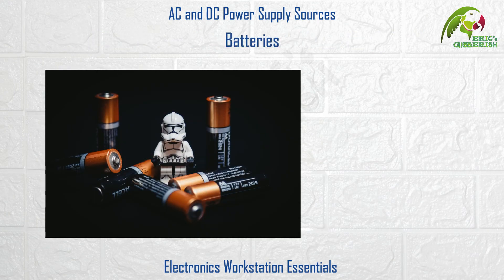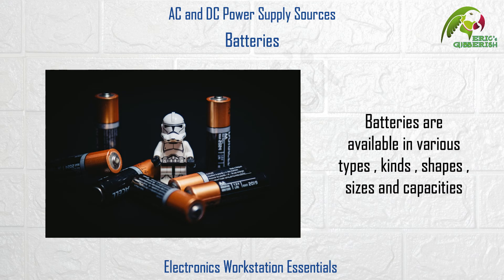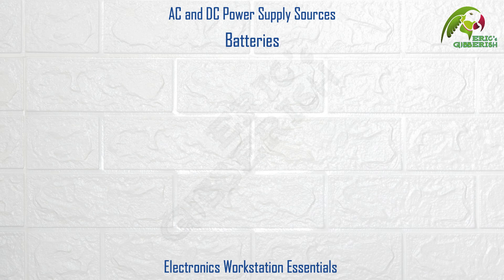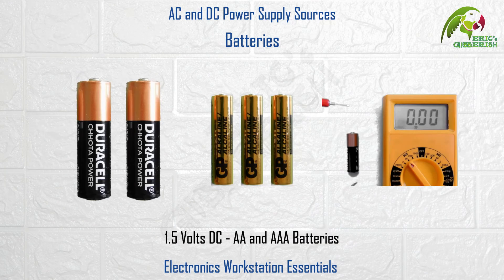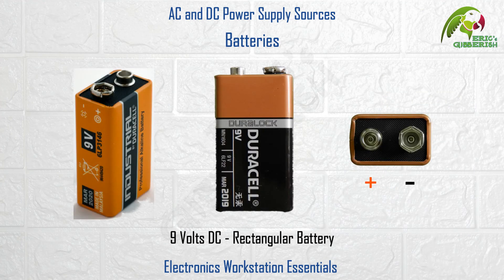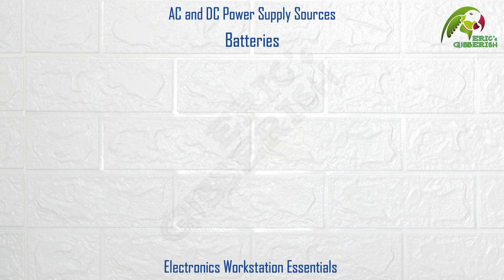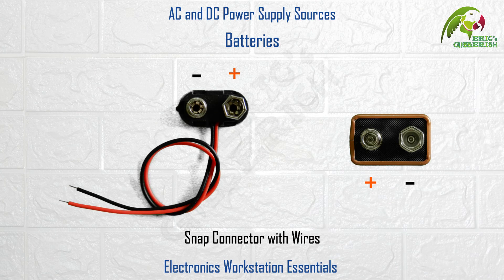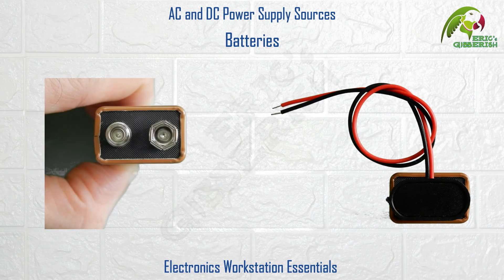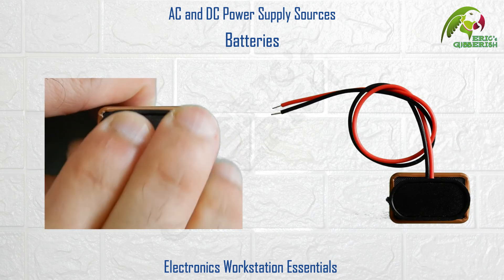Batteries. Batteries are available in various types, kinds, shapes, sizes and capacities. As examples, the popular 1.5V DC AA and AAA batteries, or the 9V DC rectangular battery. You can use a snap connector with wires similar to this one to connect the battery to a circuit.